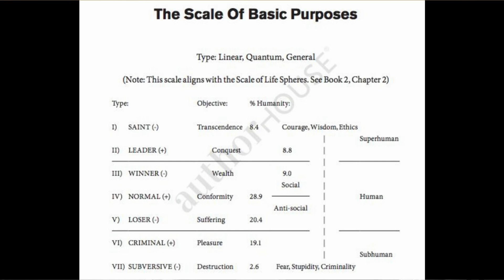One way you can spot leaders is that bad things happen to them. Winston Churchill had a lot of bad things happen to him — his life was no bed of roses. But if it weren't for Churchill, the English would have surrendered to the Germans. The Germans were trying to get the English to surrender for years, and the only reason they didn't was that Churchill was prime minister, determined to defeat the Nazis and Hitler in particular.